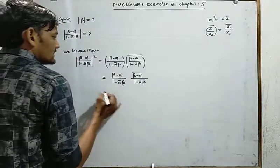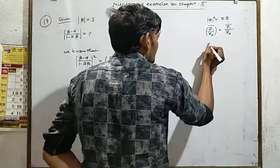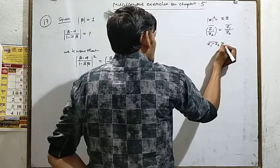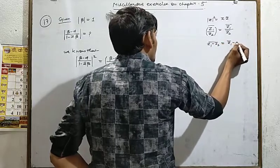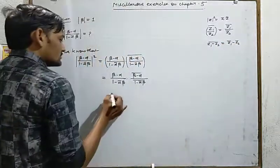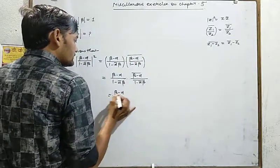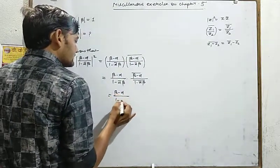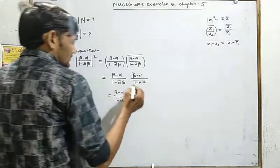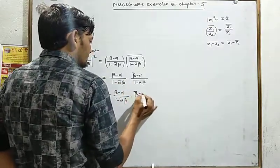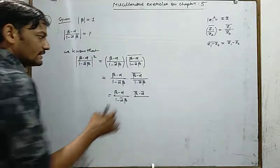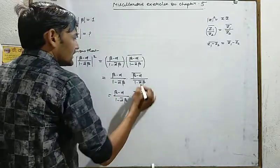फिर property होती है कि z1 minus z2 का bar होती है z1-bar minus z2-bar। जब हम यह property apply करते हैं, तो beta minus alpha का bar हो जाता है beta-bar minus alpha-bar, और denominator में 1 minus alpha-bar beta का bar लेंगे।